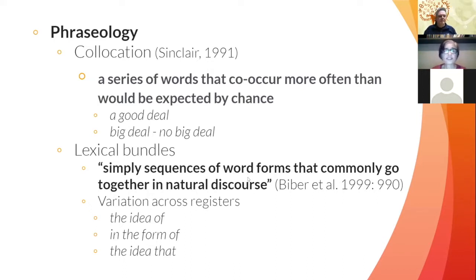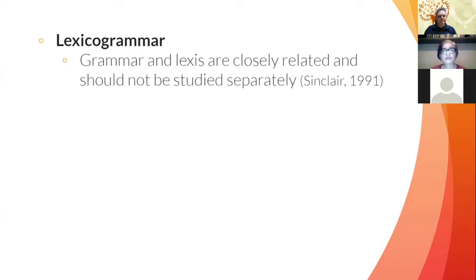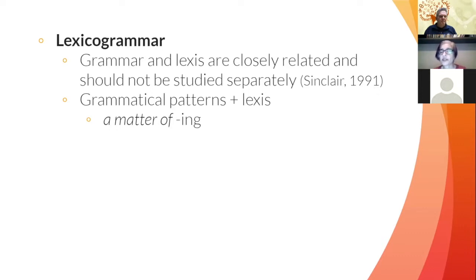Besides studies on phraseology, corpus linguistics has developed a lot of studies on lexical grammar. Grammar and lexis are closely related and should not be studied separately — grammatical patterns and lexis seem to go together. Some words tend to occur more often in certain grammatical patterns, or some lexis calls for certain grammatical patterns. For instance, if we look at the word 'matter' and a verb follows, then 'a matter of' will take the -ing form. This is what Biber calls lexical frames.